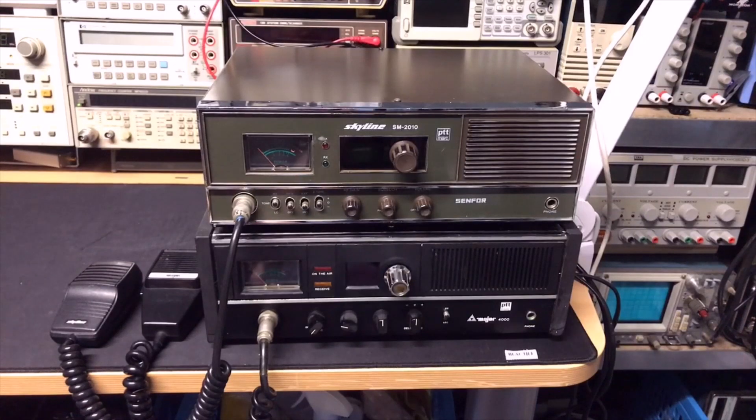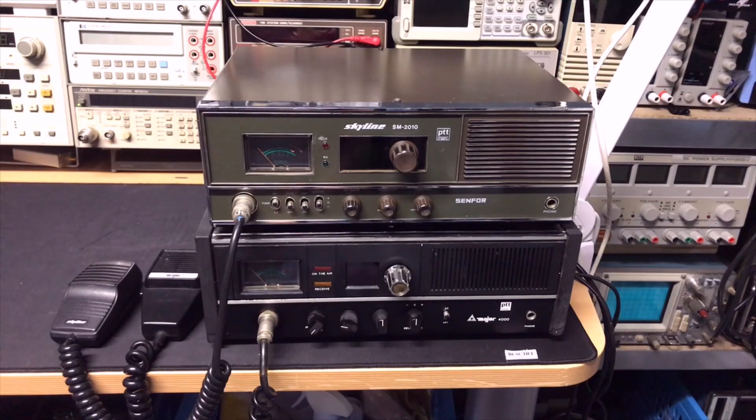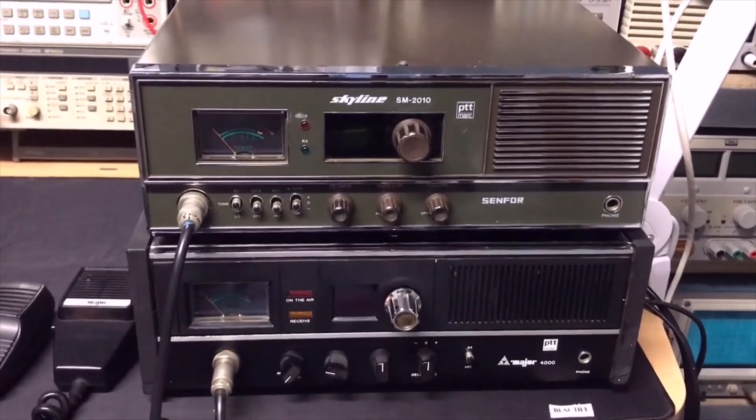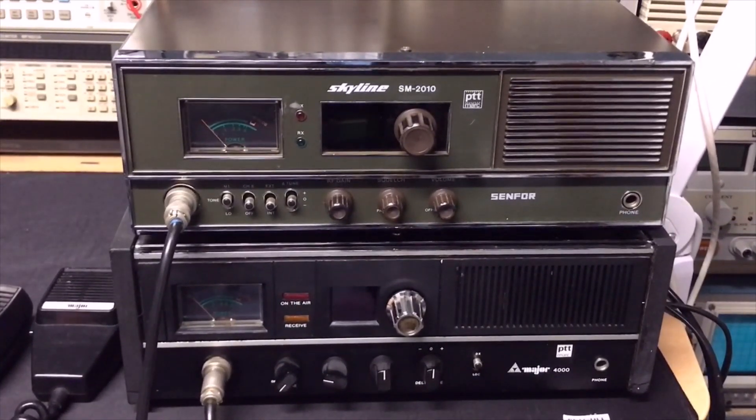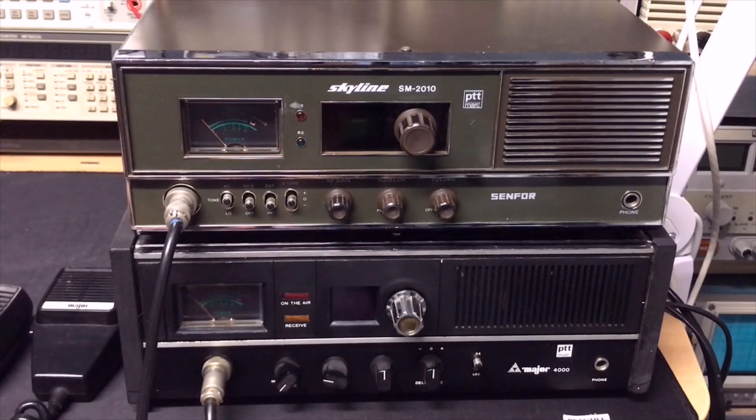Oh and here we have the two radios. In the Netherlands, these were very popular, exactly these types. The Skyline, the 2020. It also had the mobile version and it was kind of blue. I also had one on my desk. You can see them in one of my other videos but this is the base station version. It's 22 channels and it has half a watt of output power and these models actually look quite nice.